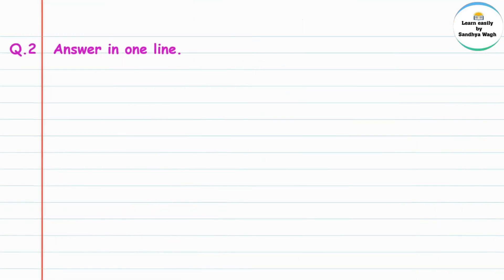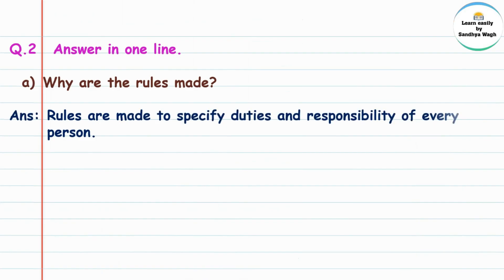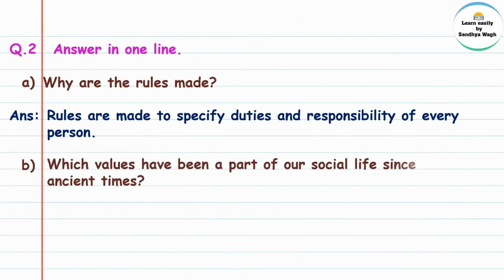Question 2: answer in one line. Why are the rules made? Rules ka banawle jataat? Answer: Rules are made to specify duties and responsibilities of every person. 'Duties' manje kartavya ani 'responsibility' manje jabadari. Pratyek vyaktichi kartavya ani jabadari nishchit karnyasathi niyam banawle jataat.